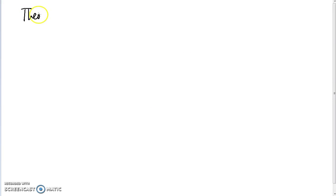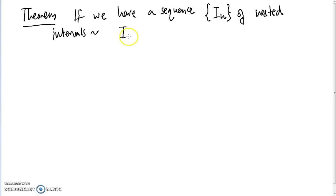So the actual theorem is if we have a sequence I_n of nested intervals, which just means that I_0, everything's a subset of the interval we draw before, then the intersection, so the space that's contained within all the intervals, there's a point, there's at least one point in that space. So it's not empty. That's the theorem.